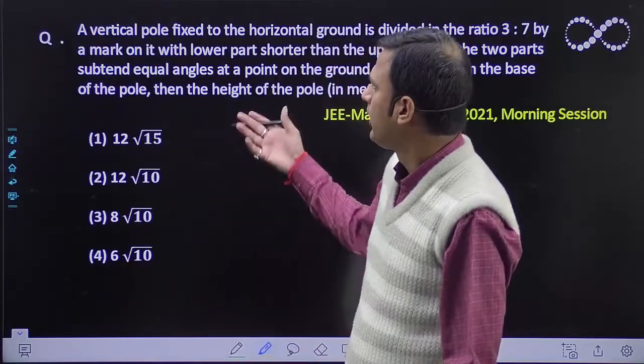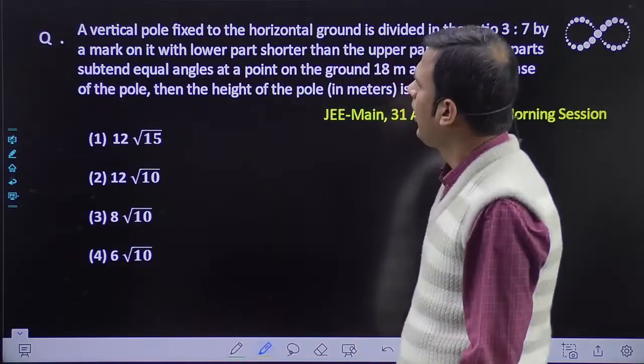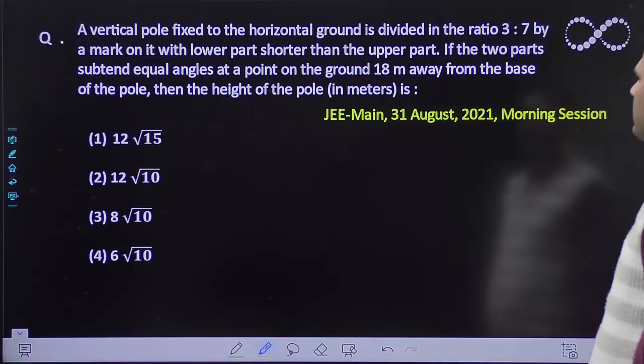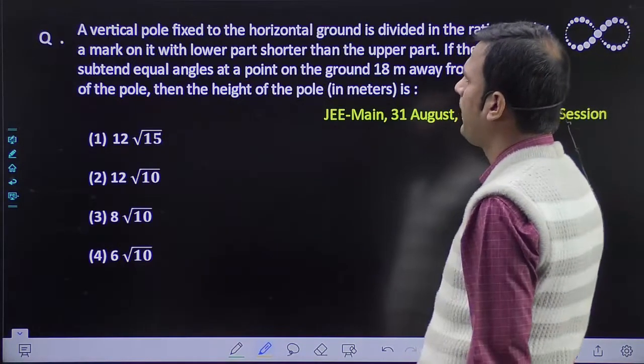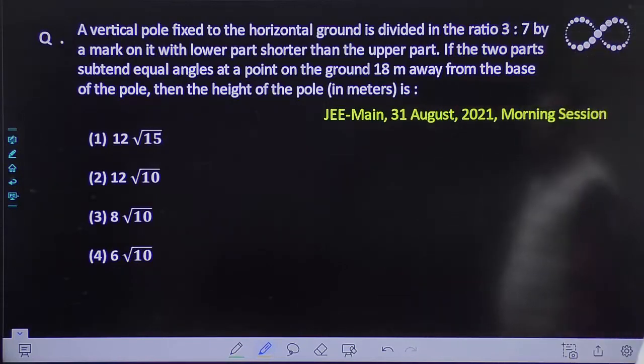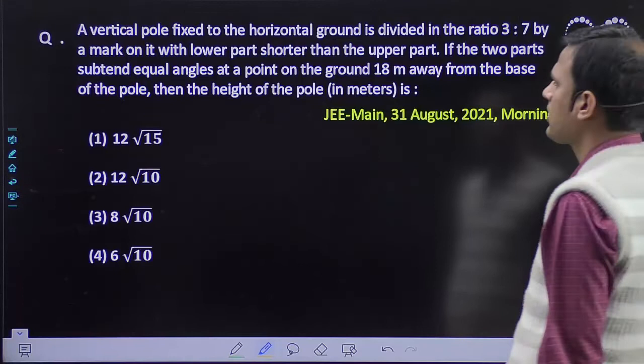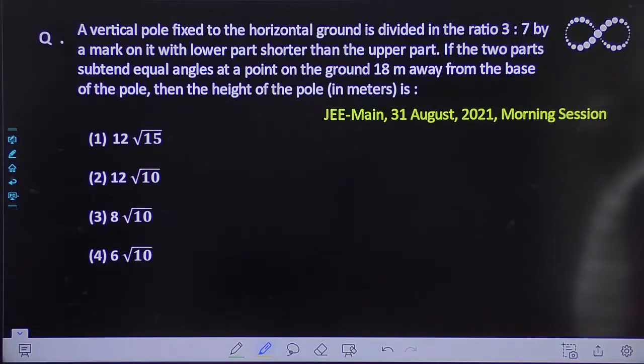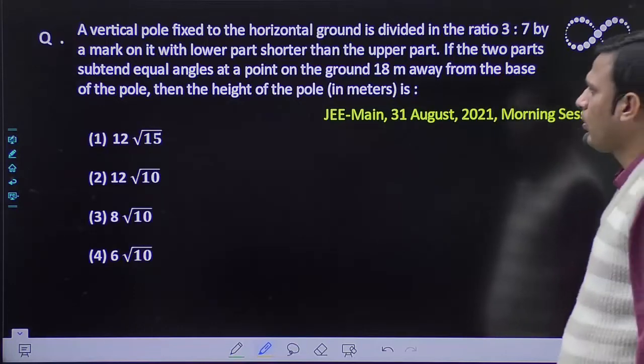Hello Student, let's see what we need to find in this question. A vertical pole fixed to the horizontal ground is divided in the ratio 3 is to 7 by a mark on it with the lower part shorter than the upper part. If the two parts sustend equal angles at a point on the ground 18 meters away from the base of the pole, then find the height of the pole in meters.